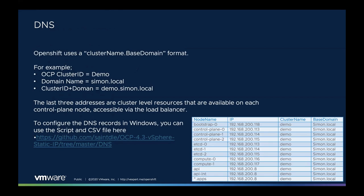First and foremost, if we go through the OpenShift documentation from Red Hat, the first prerequisite you're going to see is DNS records. From 4.4 and earlier, there are some real strict requirements. OpenShift uses a cluster name dot base name format. So for example in this demo, our cluster ID is going to be called demo. This essentially is your cluster name of the Kubernetes environment, and then the domain name is the FQDN of the domain that you're running this in. So in my environment it's going to be demo.simon.local.